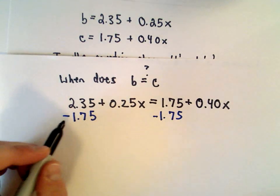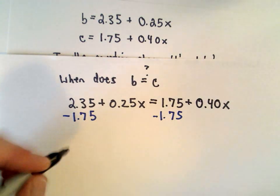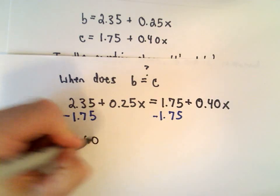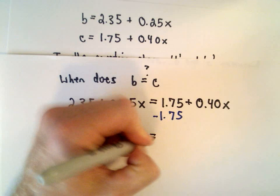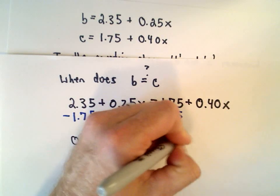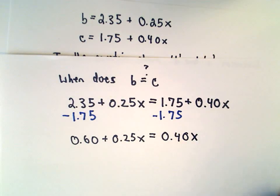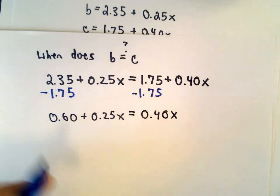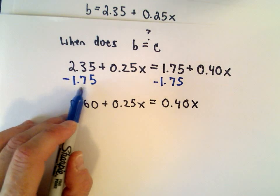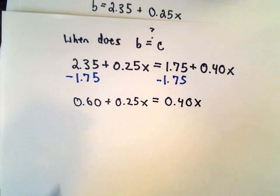So if I do that, let's see, 2.35 minus 1.75 - that's going to be 0.60. We still have plus 0.25x equals 0.40x. Again, not allowed to use a calculator on this section, so I'm just thinking about money. Two dollars and thirty-five cents minus a dollar seventy-five would leave you with sixty cents.